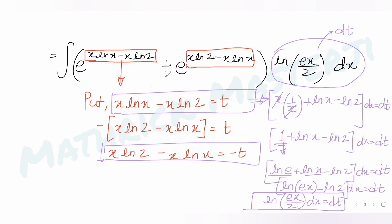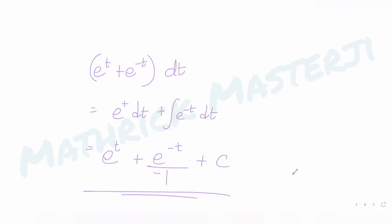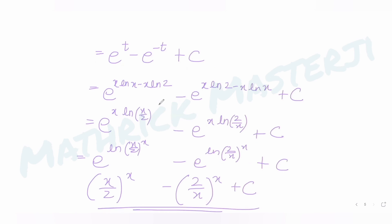To summarize: first, I converted the function using the identity e^(log f(x)); then I applied a substitution t so the other part became −t; differentiating gave log(ex/2) dx = dt; integrating and back-substituting gave the final answer as Option B.